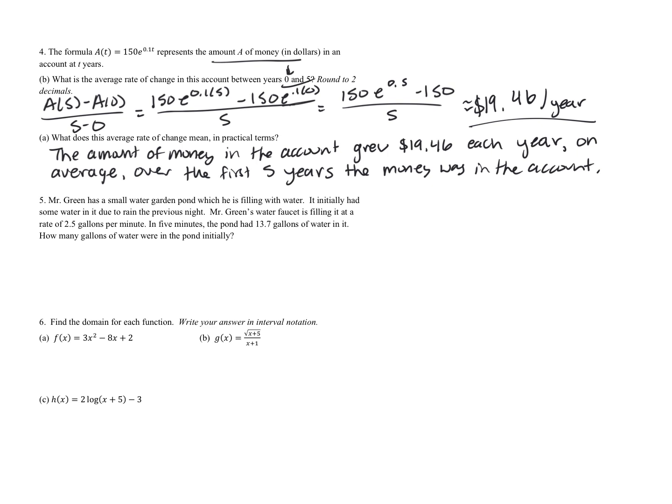Question five: Mr. Green has a small water garden pond which he's filling with water. It initially had some water due to rain the previous night, and his faucet is filling it at a rate of 2.5 gallons per minute. We also know that in 5 minutes the pond has 13.7 gallons. We want to find how much was in it initially. We have this constant rate — 2.5 gallons per minute — and we know the amount at a certain time.